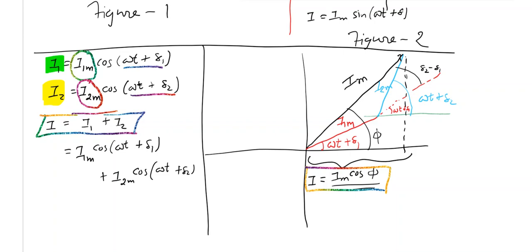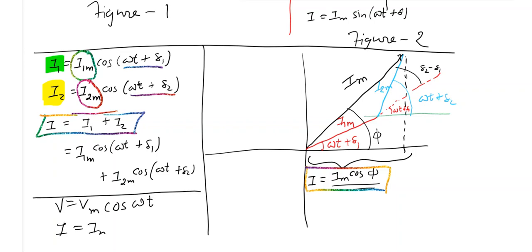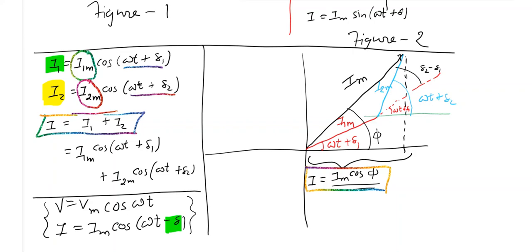Third use: if you have a voltage and current equation, you can determine the phase difference between voltage and current using the phasor diagram. For example, if voltage is v = Vm cos(ωt) and current is i = Im cos(ωt − δ), it is clear that δ is the phase difference. The same thing can be represented graphically, so that is the third use of phasor.